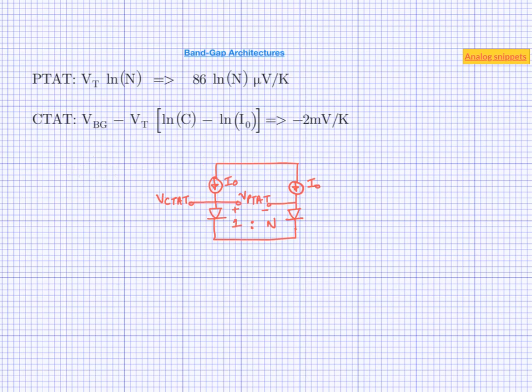Let's choose the value of n to be a more reasonable value of, say, 8. In order to match the slopes of PTAT and CTAT we need to amplify the PTAT voltage by around 11, and this amplification needs to be very accurate so that we don't introduce errors and inaccuracies.